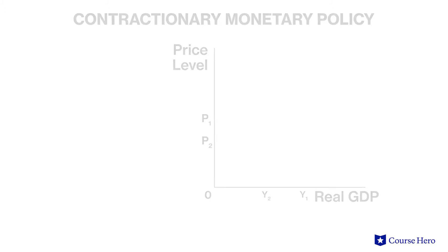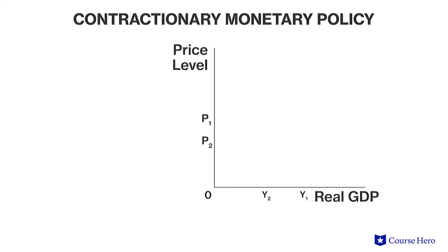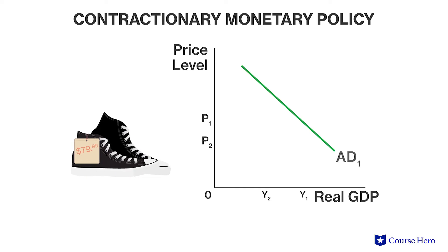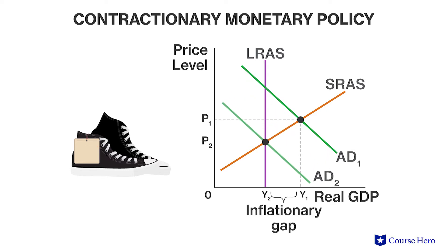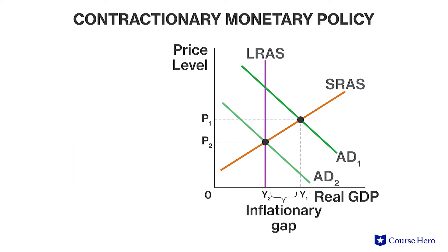An unusual increase in population might lead to a period in which the demand for goods is so high that supply is insufficient. The goal of any policy intervention during an inflationary gap is to decrease aggregate demand and slow the economy until the equilibrium output reaches full employment levels.